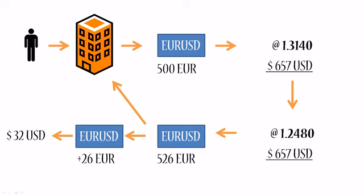You go to your broker, you borrow 500 euros, you sell them at 1.3140 for 657 US dollars. You hold on to your 657 US dollars until the price for euros drops. You use those 657 dollars to buy back euros at the new lower price of 1.2480 — you get 526 euros in return. You return 500 euros to your broker. Your profit is 26 euros, and because your account is in US dollars, you convert your euros back into US dollars and you have 32 US dollars of profit.